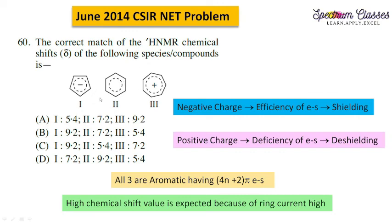This question can be understood in multiple ways — aromaticity, and also the fact that the molecule with the negative charge is acidic in nature since it can readily lose its proton to acquire a negative charge and retain aromaticity. All three are aromatic and have different chemical shift values in the 1H NMR spectrum. I hope you found this lecture helpful — please subscribe to the channel, give a thumbs up, and thanks for watching.